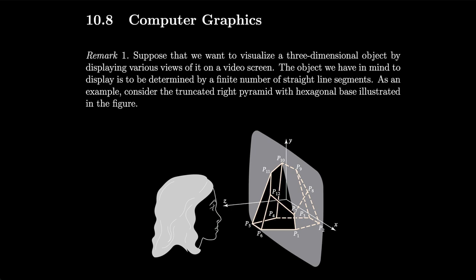Suppose that we want to visualize a three-dimensional object by displaying various views of it on a video screen. The object we have in mind to display is to be determined by a finite number of straight line segments.